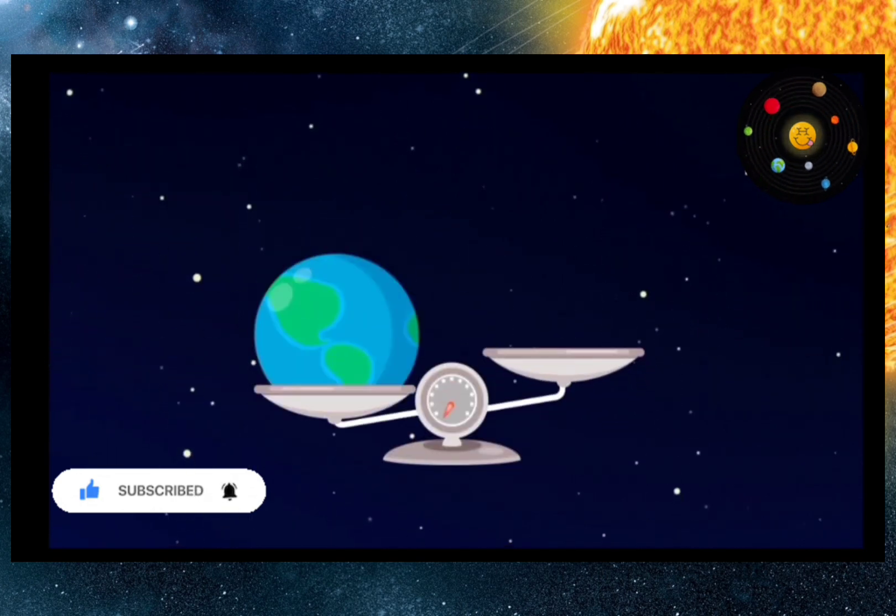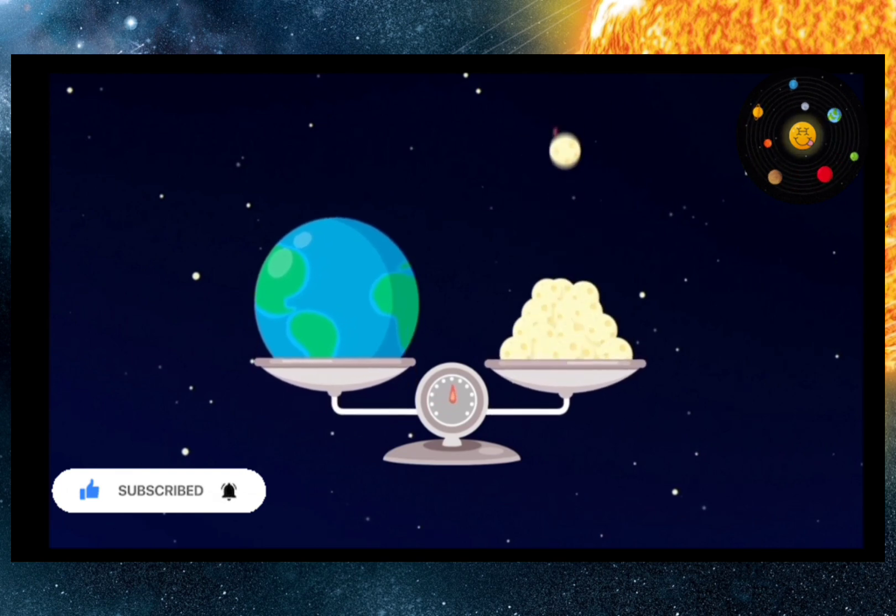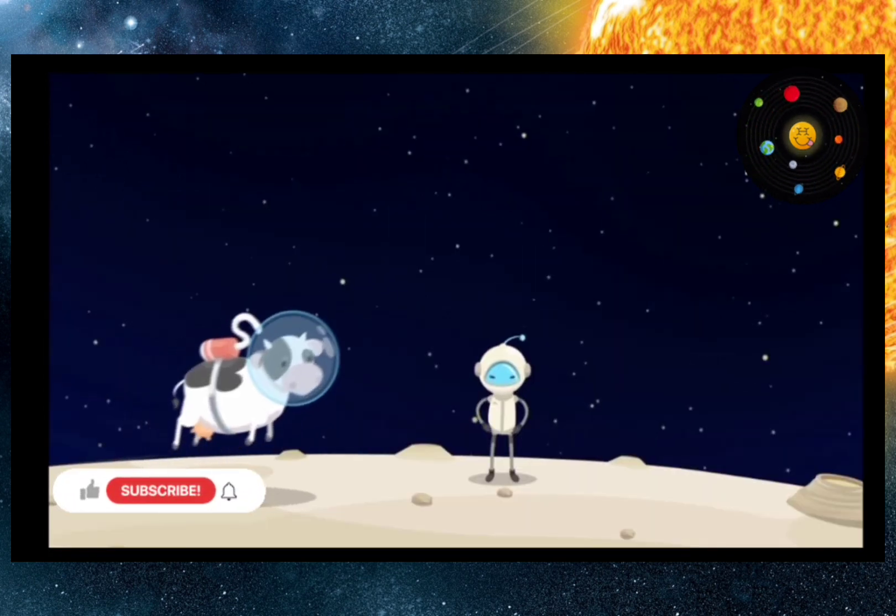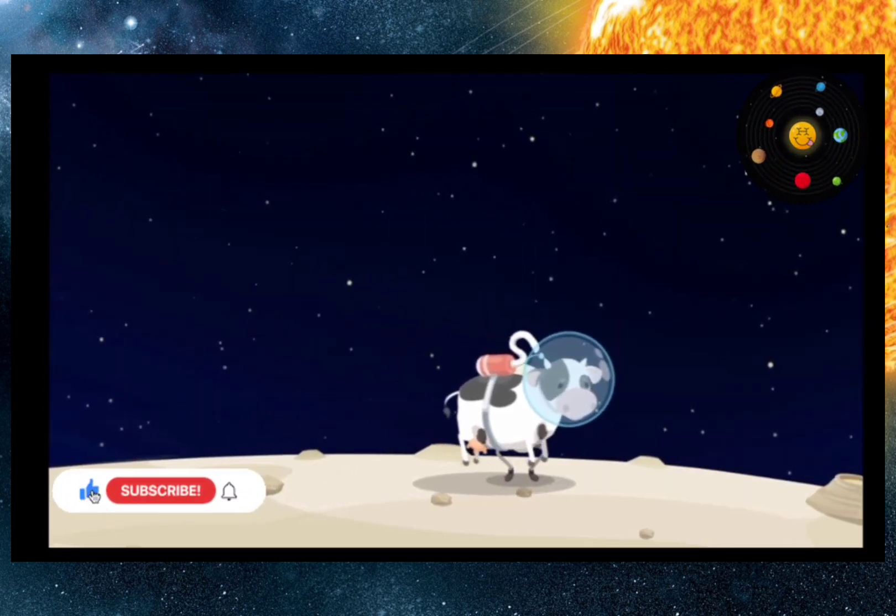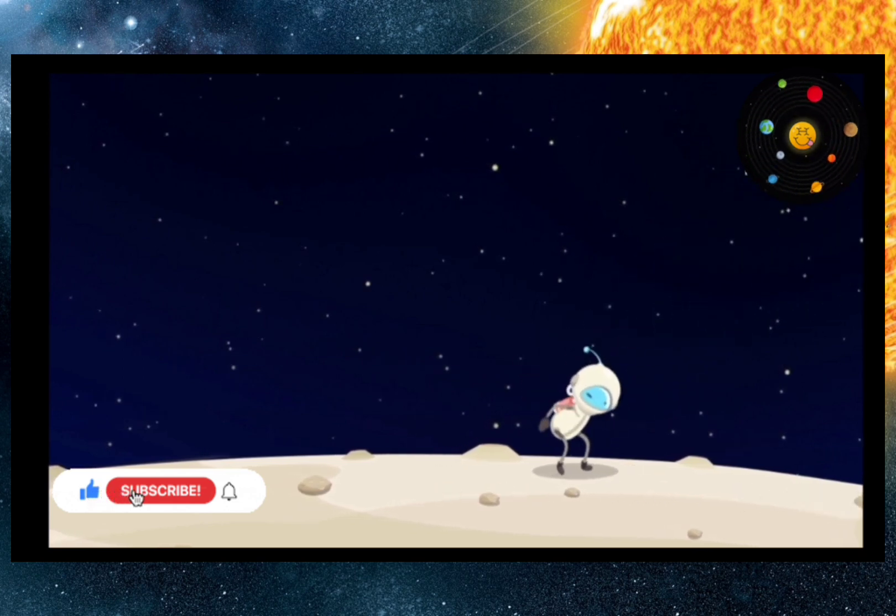The Earth is 80 times heavier than the Moon. But things on the Moon are six times lighter, so you can easily lift a cow, or jump very high.